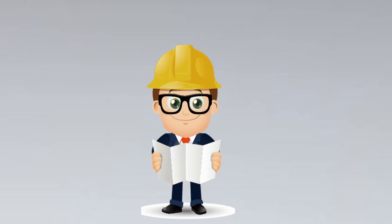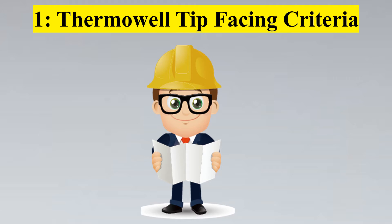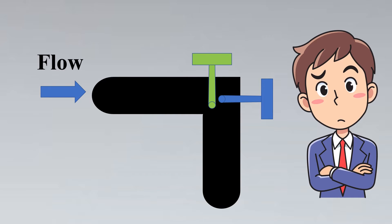Let us look into the first criteria which is the most important criteria, thermowell tip facing criteria. What does this criteria state? It states that for example, this is your pipe and this is an elbow. Now here is your flow direction. So how would you install your thermowell on this elbow? Should it be installed like this or should it be installed like this? Isn't this a bit confusing?